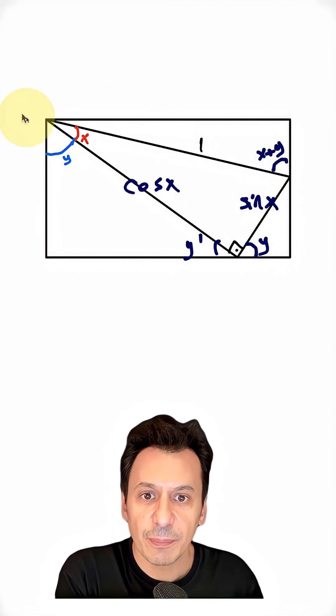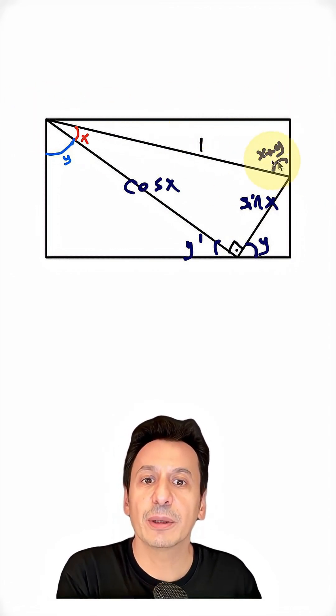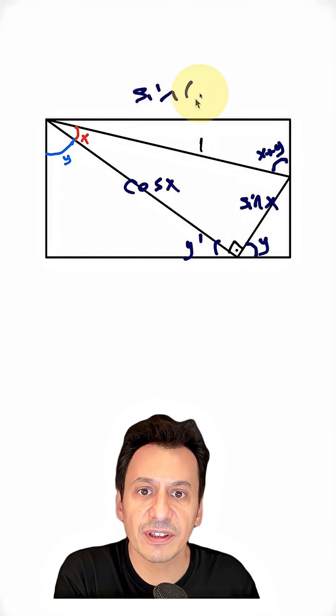When I look at the right triangle here, my hypotenuse is 1. And I can write sine of x plus y for the side opposite x plus y.